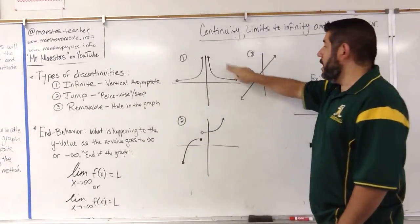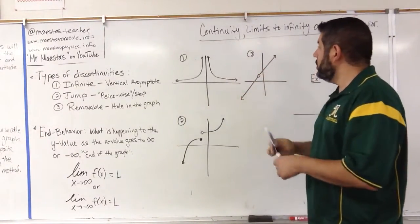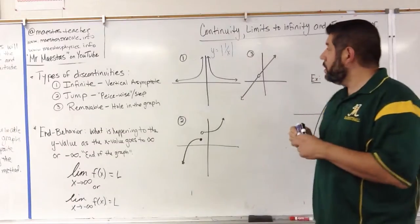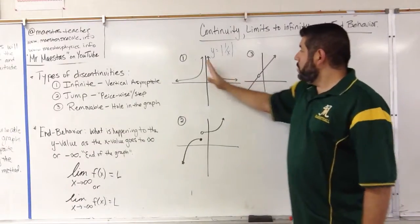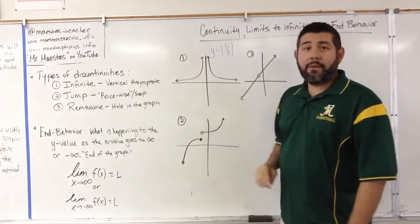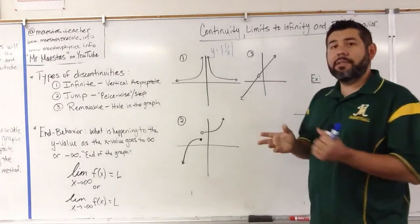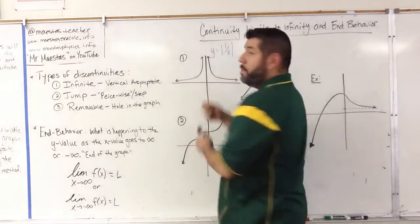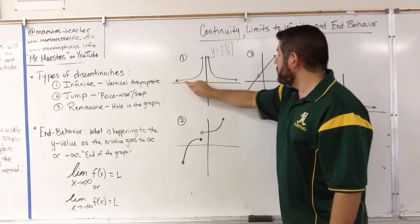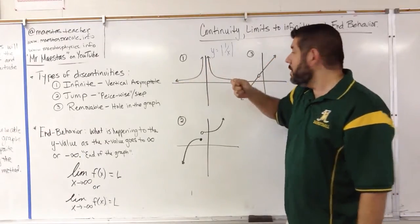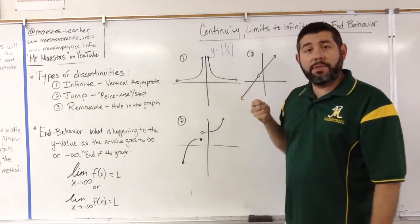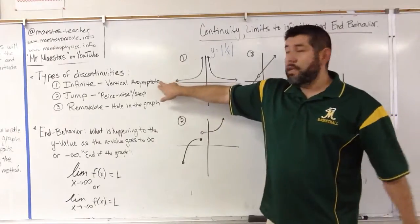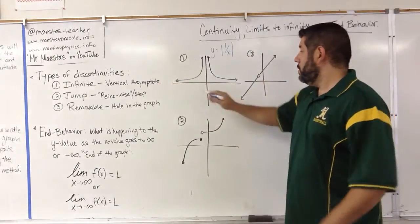Number one is a graph of y equals the absolute value of 1 over x. We see that there is a vertical asymptote at x equals 0. If we were to draw this graph from left to right, we would draw this part here and then have to take our pencil off to draw the next part, which means it's discontinuous at x equals 0. This is an example of an infinite discontinuity.